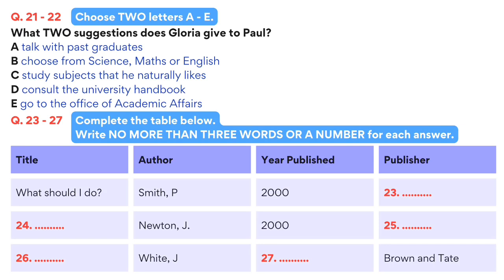The first book I found was What Should I Do? It was written by Paul Smith, and I believe it was published in 2000 by Smith Brothers. I think this was the best book I read, although Judy Newton's Choosing University Courses was also an excellent help for me. Can you remember what year that one was published? Most of the books I read were published around the same year — 2000, I think. I can't remember who published it; I think it was Printers Limited. You'll have to check that one out yourself.